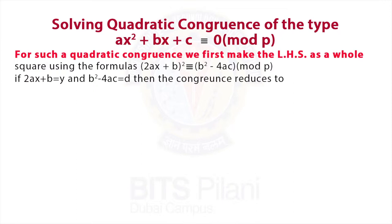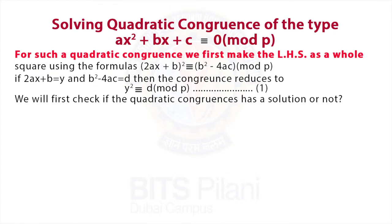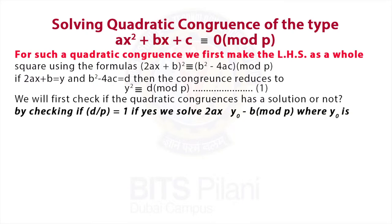Using the formulas (2ax + b)² ≡ b² - 4ac (mod p). If 2ax + b = y and b² - 4ac is taken to be d, then the congruence reduces to y² ≡ d (mod p).